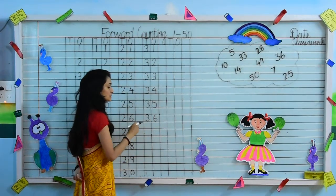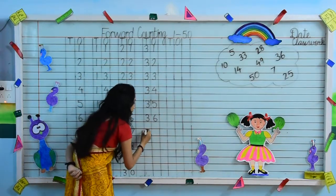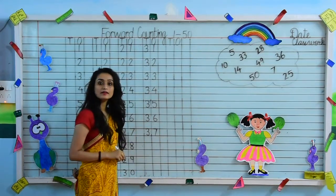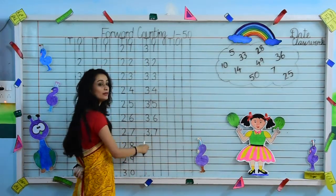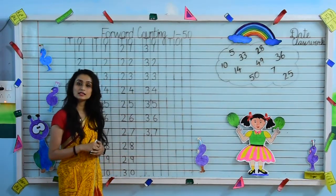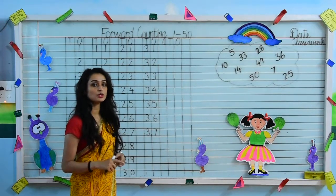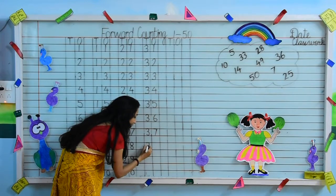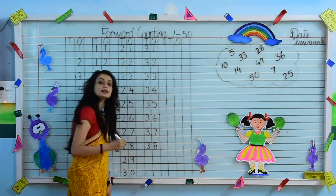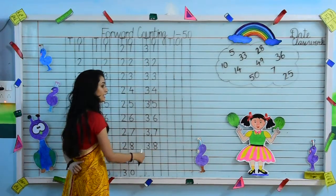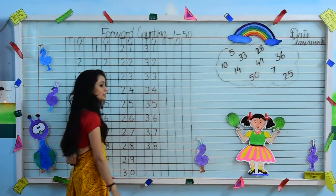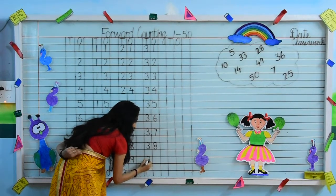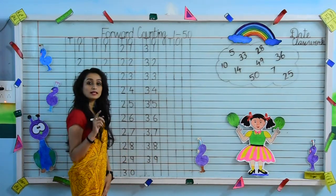After 36, 3, 7 — 37 is the next number. What comes after 37? After 37, 3, 8 — 38 is the next number. After 8, next number is 9. So we will write 3 and 9, which together makes 3, 9 — 39.